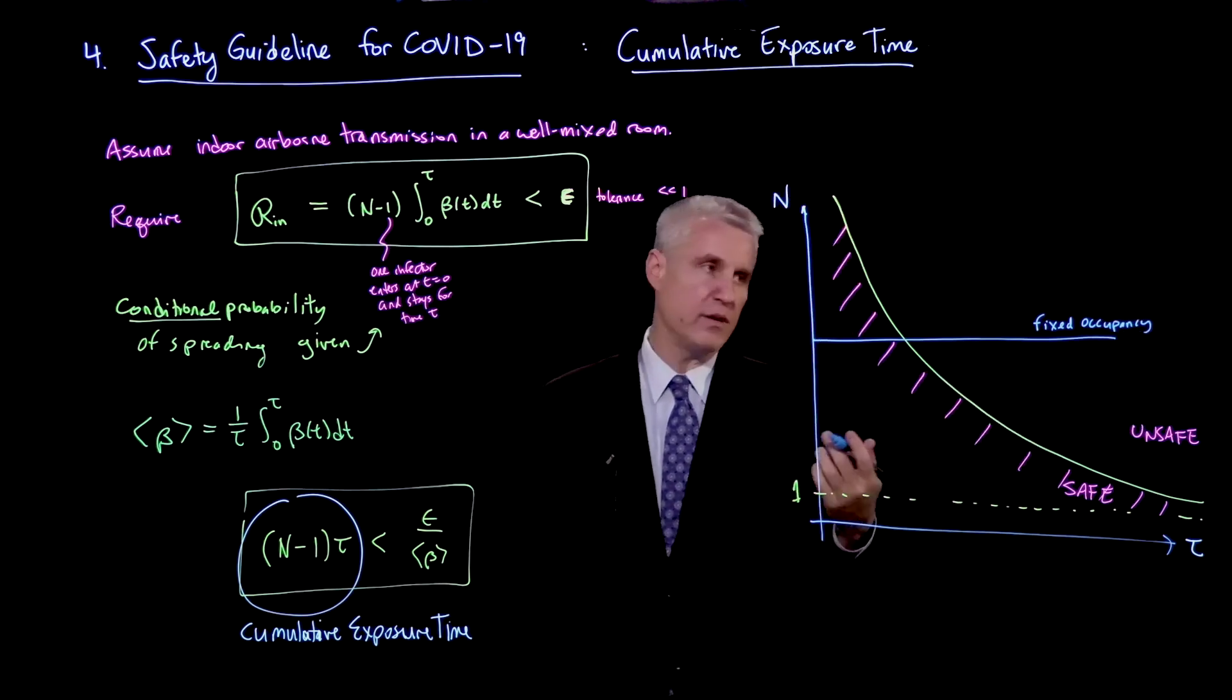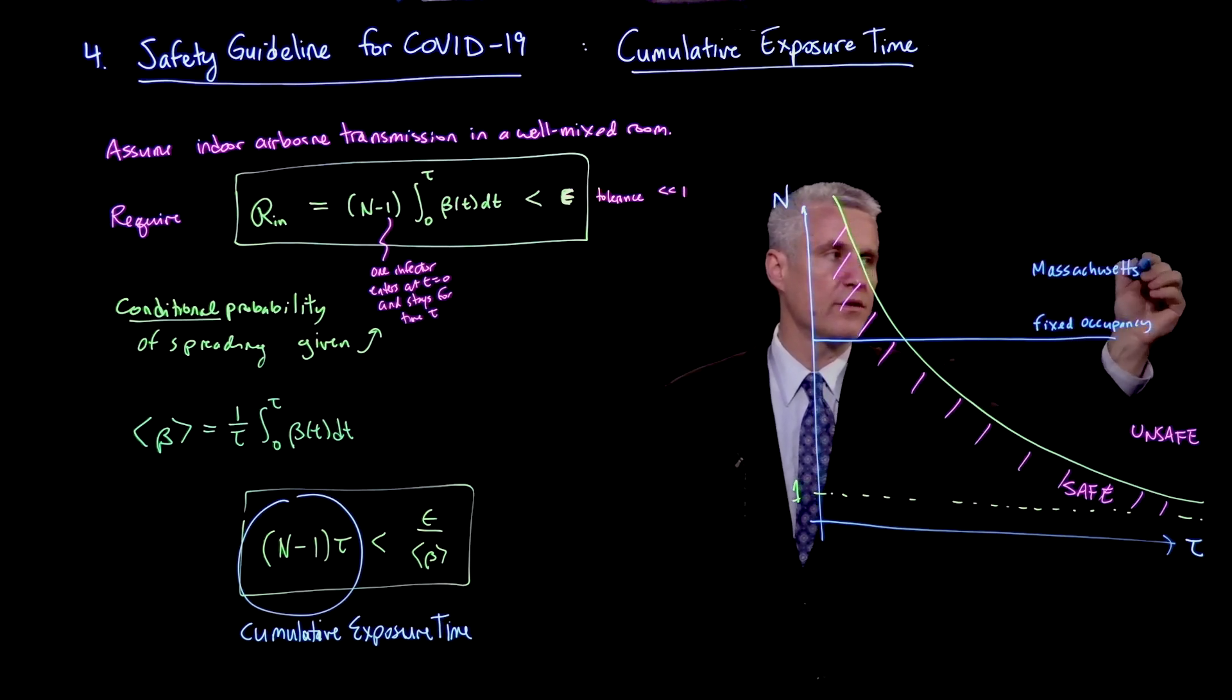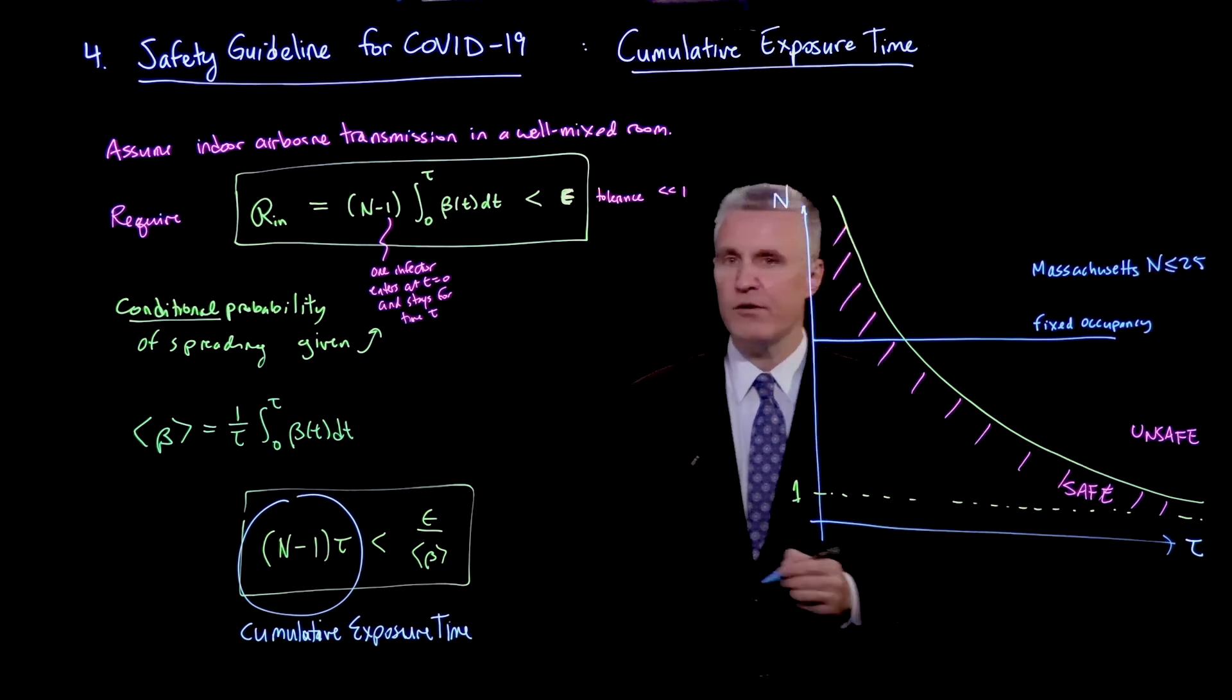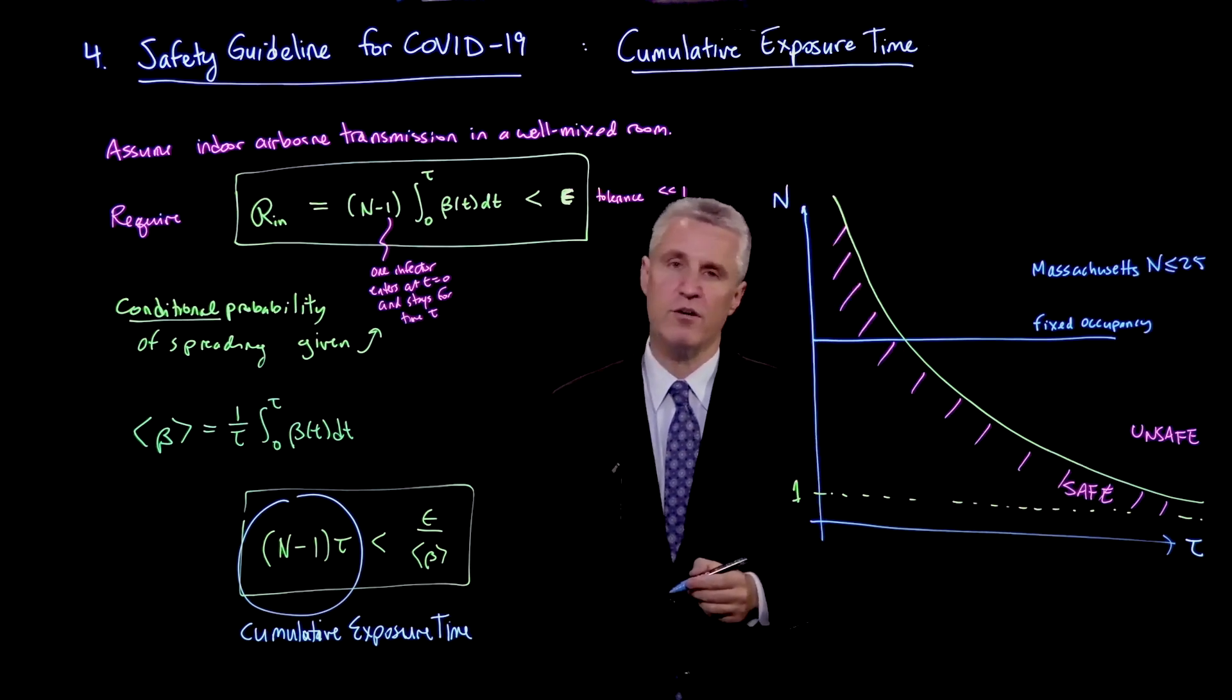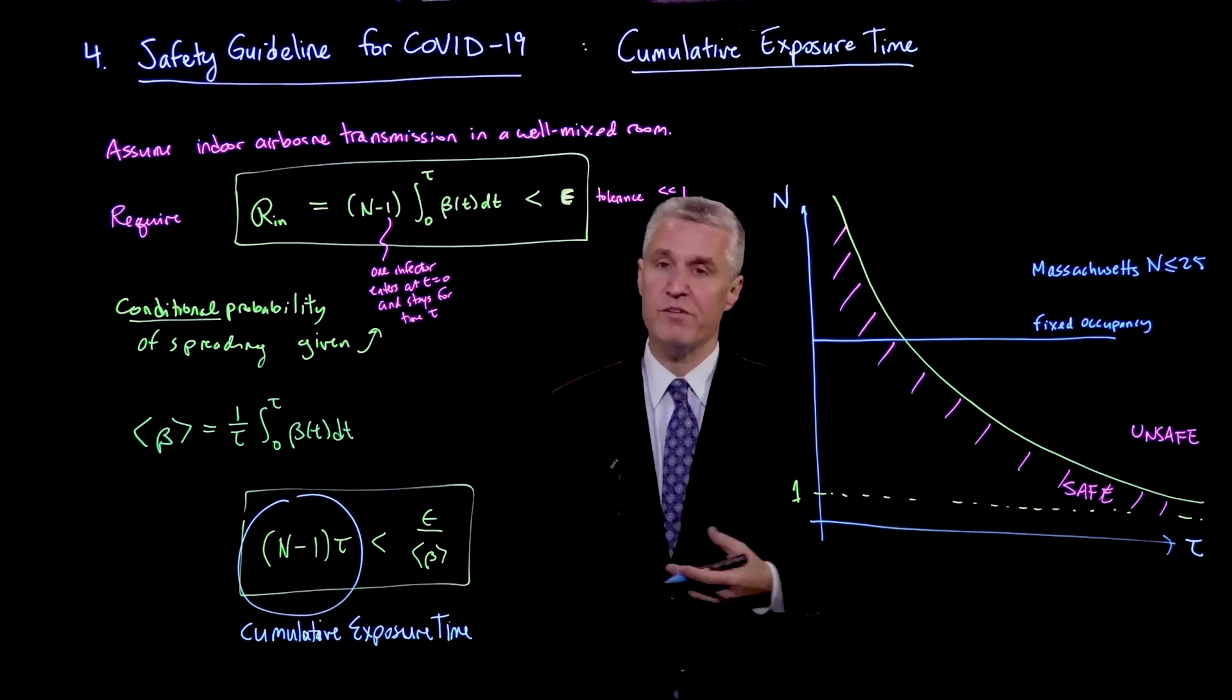And in fact, in Massachusetts, for example, right now, there's a guideline which says n is less than 25. No more than 25 persons can congregate in a room. In fact, I'm teaching a class right now, which we have 51 people.